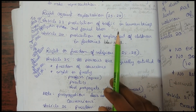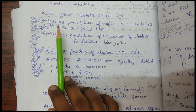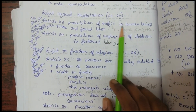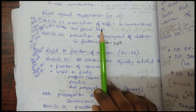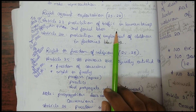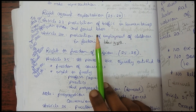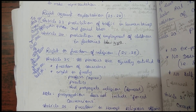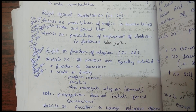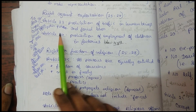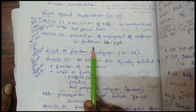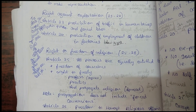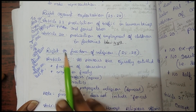Right against exploitation covers Articles 23 and 24. Article 23 deals with prohibition of traffic in human beings and forced labour — you cannot illegally trade or force men, women, or children for any illegal purpose. Article 24 says prohibition of employment of children in factories below 14 years of age — children below 14 must not be employed.